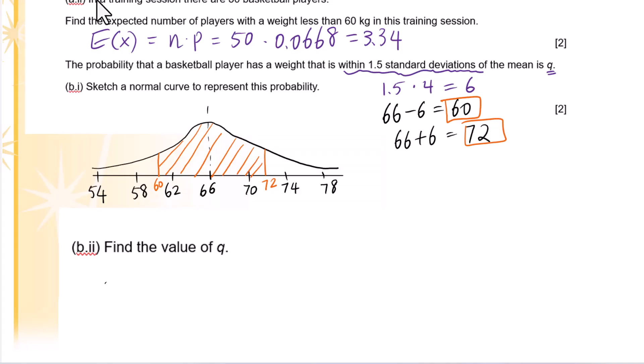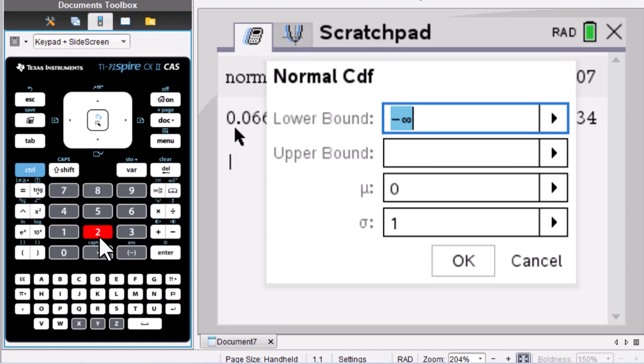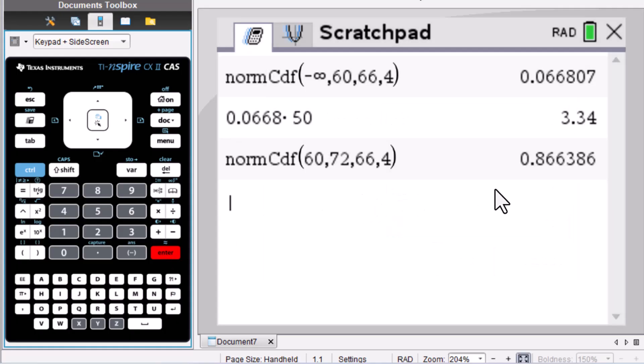B2. Find the value of Q. We are looking for probability of 60 to 72. We use normal CDF, menu 552: 60, 72, 66, 4. Enter, enter. Answer is 0.866.